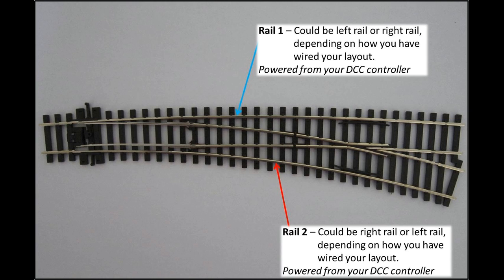So when looking at this turnout here, the top rail could be either left or right rail depending on how you wired your layout and the orientation of the turnout. I have therefore referred to the two stock rails as rail 1 and rail 2, just to avoid confusing anyone.